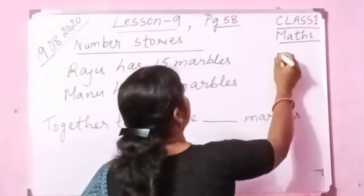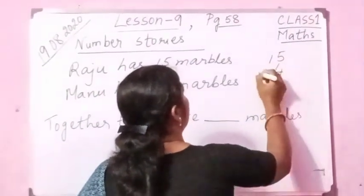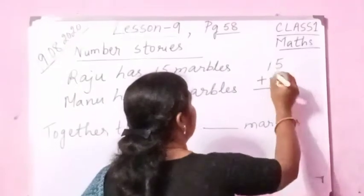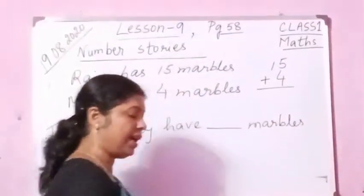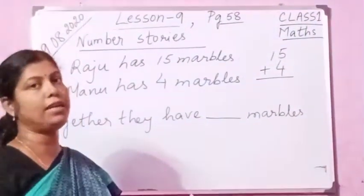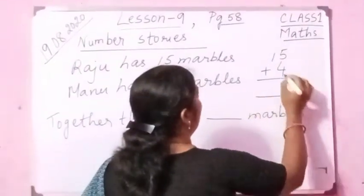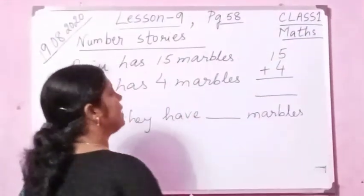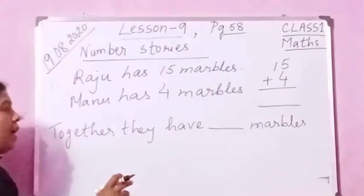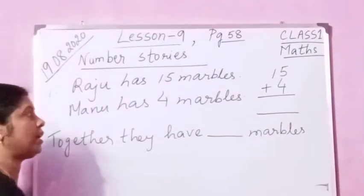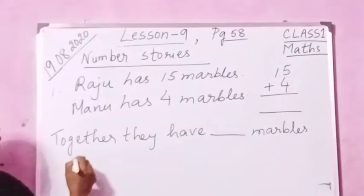Let us add here: 15 plus 4. You can write ones and tens if you want. If you don't want to write, don't write, because in the book it is not given. So now you see 15 plus 4 — we are going to count. You can count on your hands also, but I am going to count and show you.